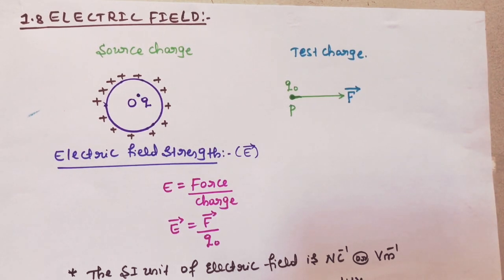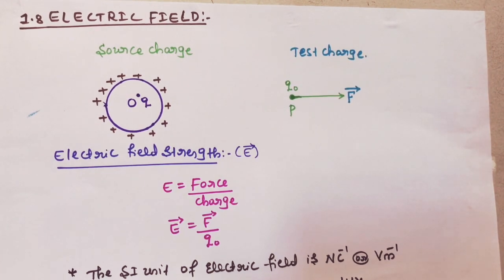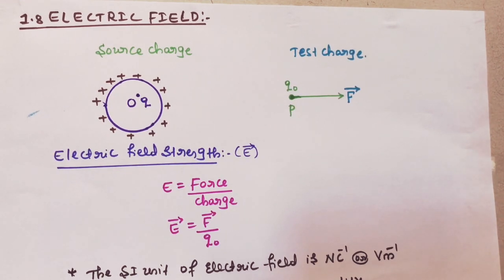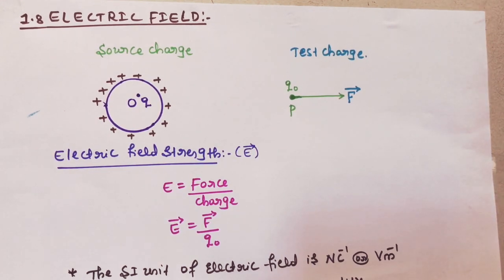The next important concept is test charge. Test charge means it is a charge having a small magnitude so that its presence does not affect the already existing electric field. Source charge means the charge which produces an electric field; test charge means a charge of small magnitude that does not disturb the existing field.